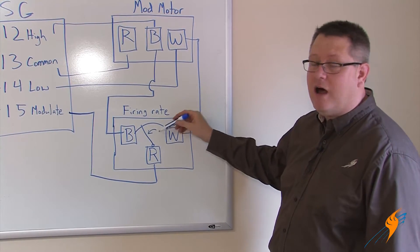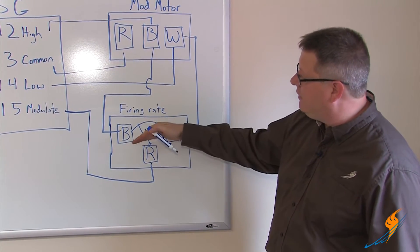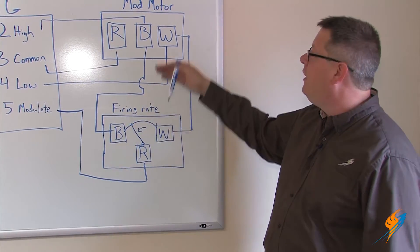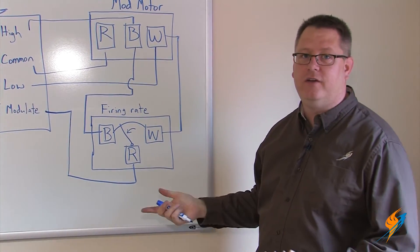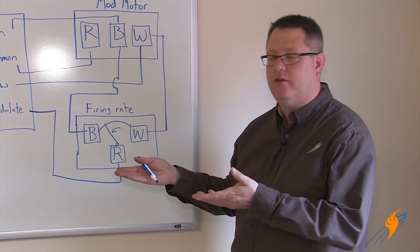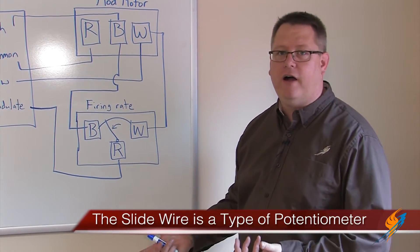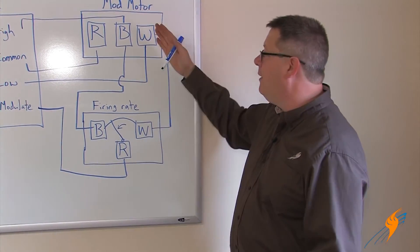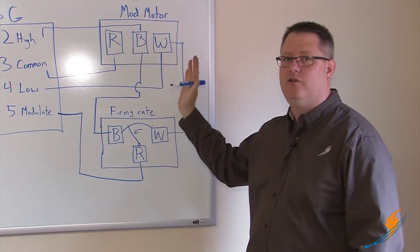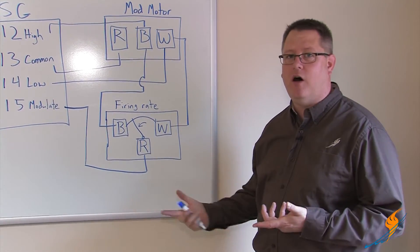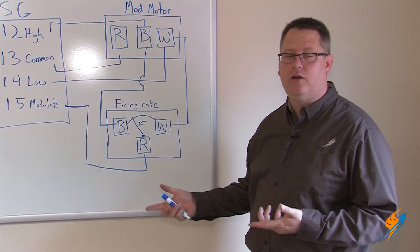So as pressure drops, we get more of an inclination to the B terminal, and the mod motor drives more to the high fire position. As the pressure increases, the slide wire moves the opposite direction to the low fire terminal, and that forces the mod motor to drive back down to a lower firing rate. That's a basic automatic firing rate control.